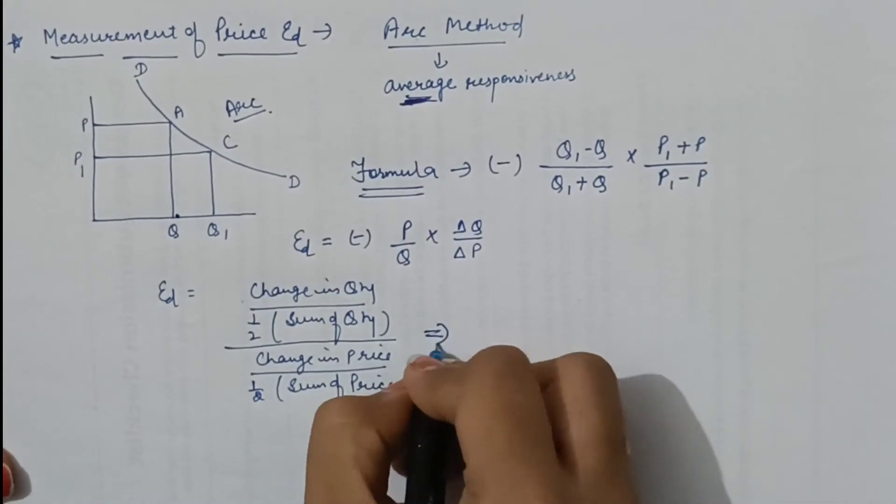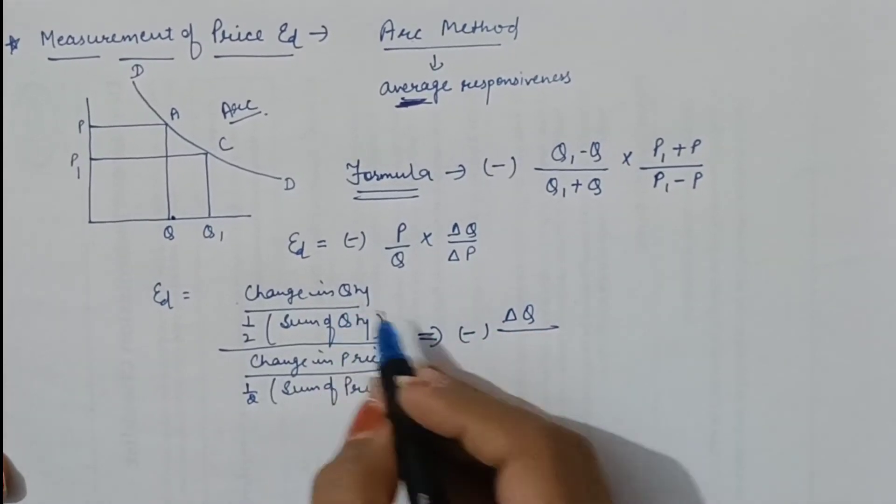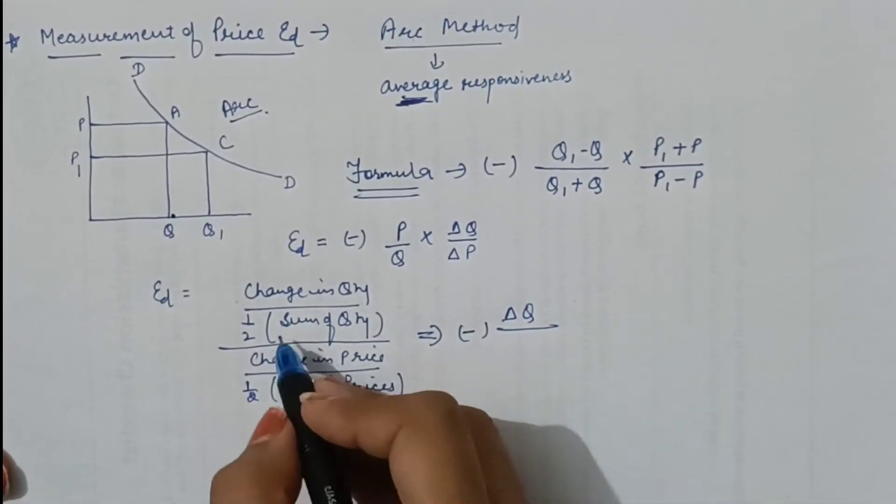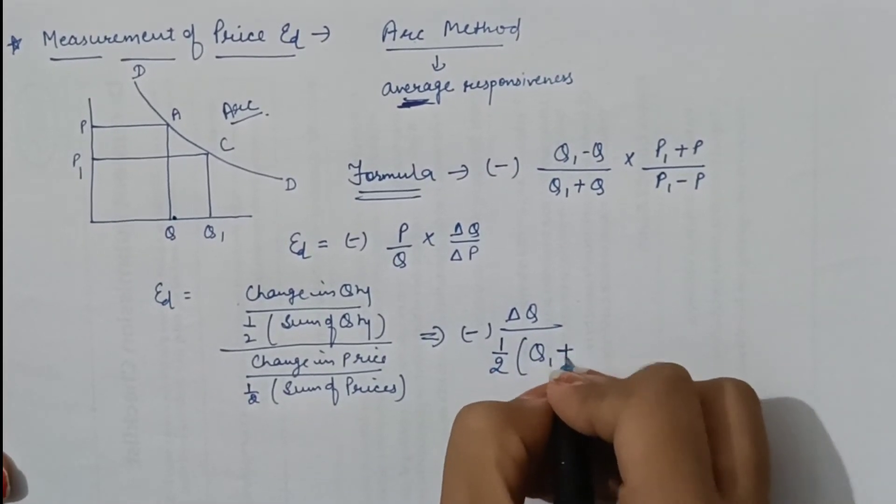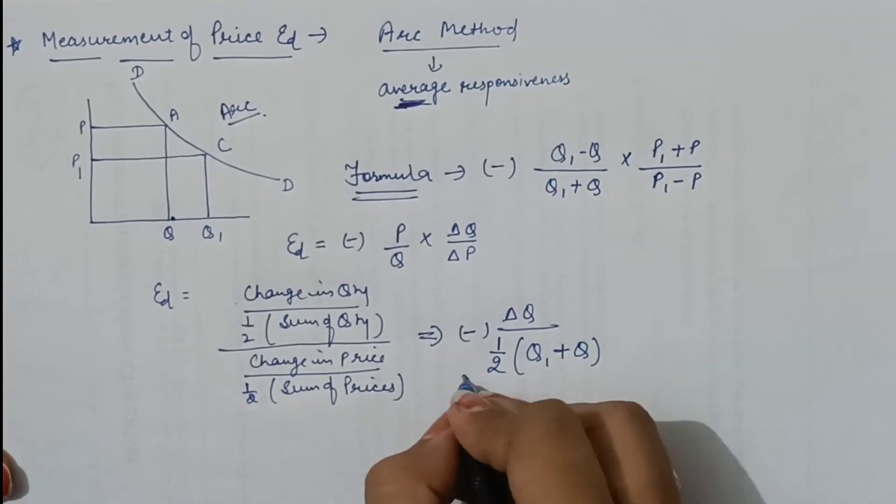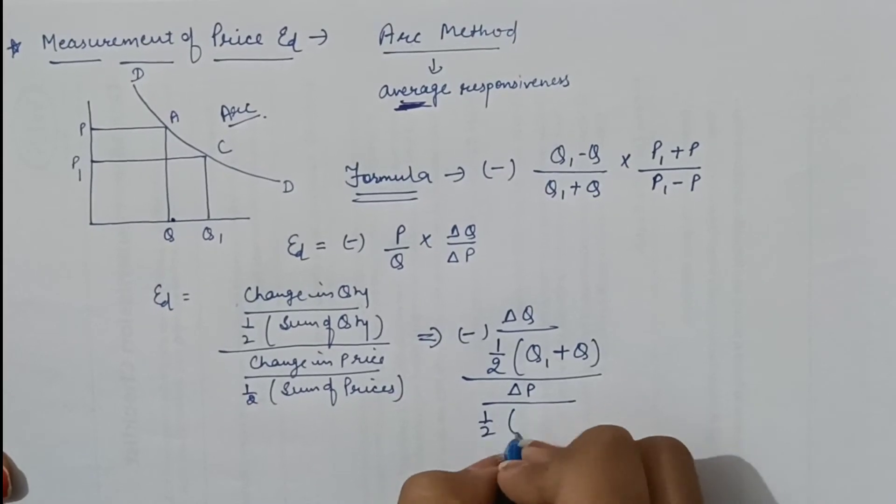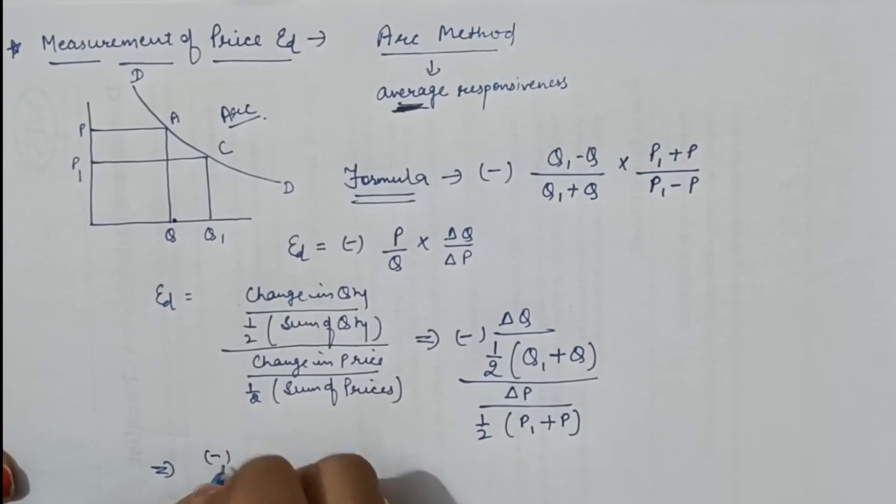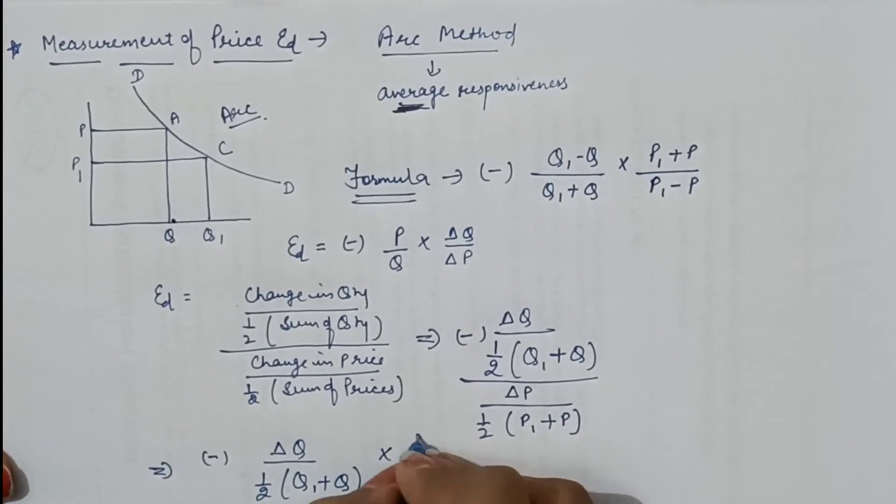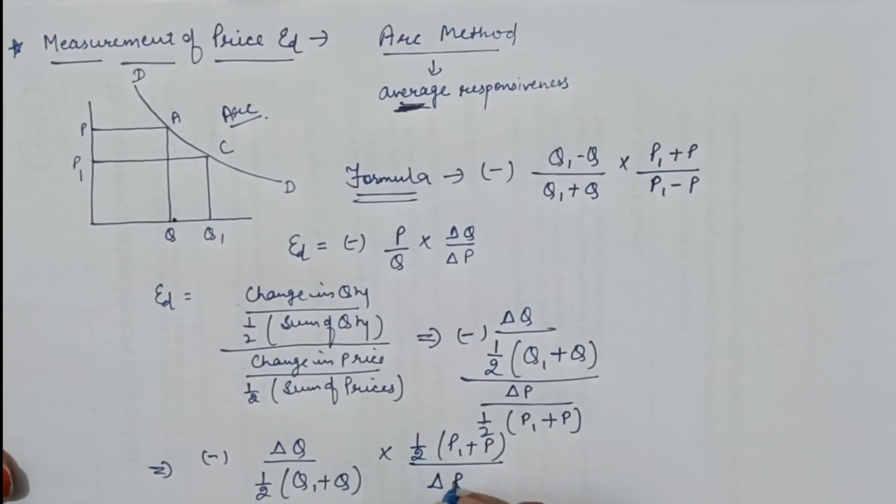If we write it in symbolic form: change in quantity would be ΔQ, half of sum of quantity is ½(Q1 + Q), divided by change in price ΔP, and half of (P1 + P). So: ΔQ / [½(Q1 + Q)] × [½(P1 + P)] / ΔP.